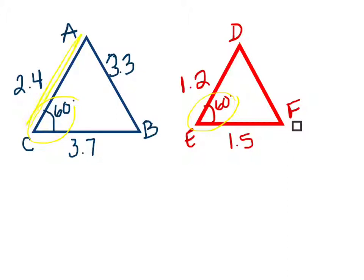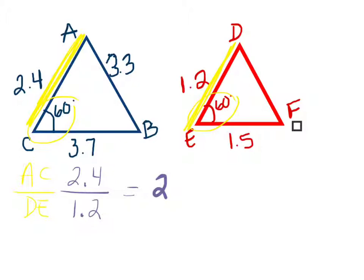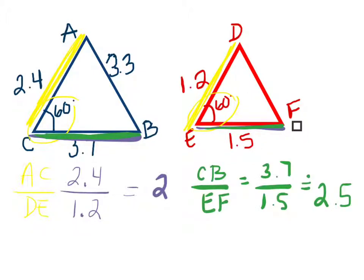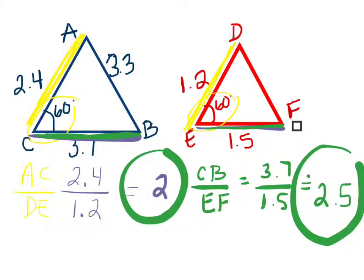Which side corresponds with AC? DE. So we're going to find the ratio of AC to DE, which is equal to 2. We're going to find the ratio of which other two corresponding sides? CB and EF. We found the ratio of those two corresponding sides — are the ratios the same? Not the same ratio. These two sides are not proportional. These two triangles are not similar because their corresponding sides do not have the same ratio.